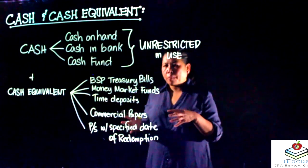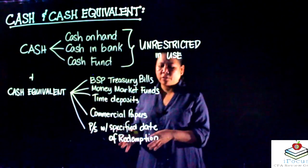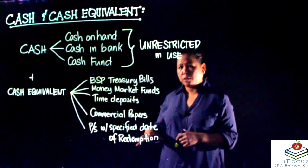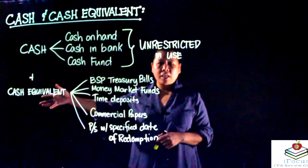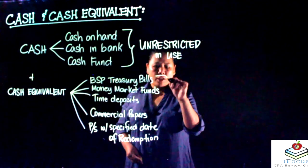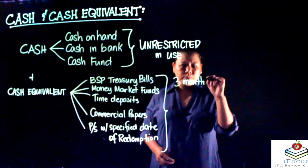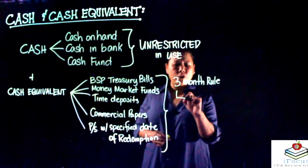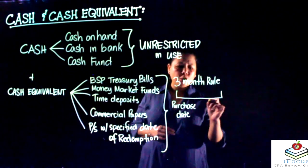The most important requirement to classify a security as a cash equivalent is that it must fall into the three-month rule. The three-month rule measures the period between your purchase date and your maturity date.